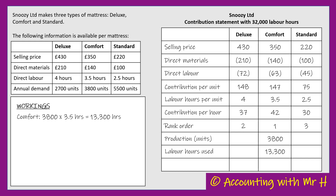We started with 32,000 hours and we're going to use 13,300 making the Comforts, so now we've got 18,700 hours left. Going back to the rank order, we'd like to make the Deluxe next because that has the second highest contribution per labour hour.